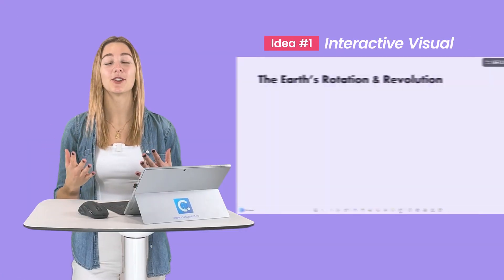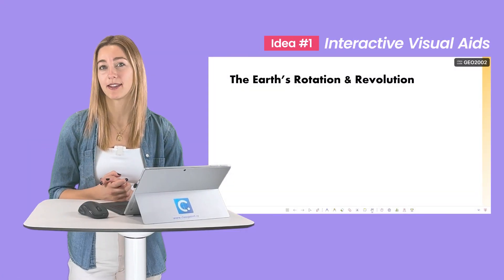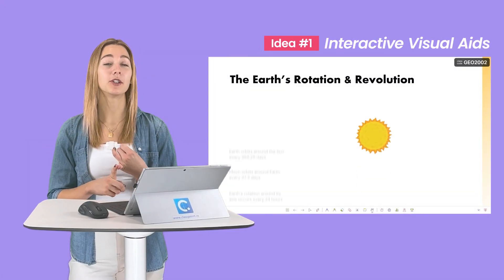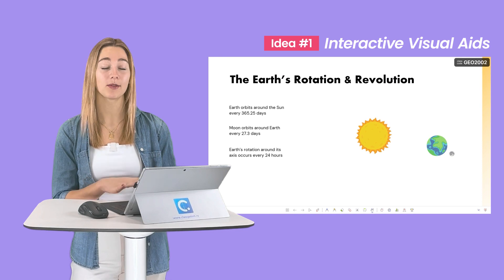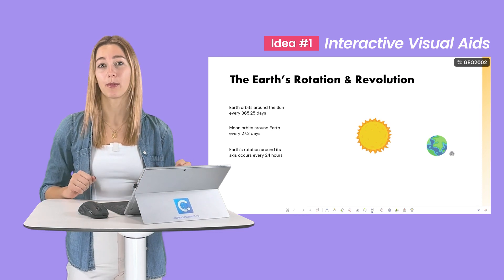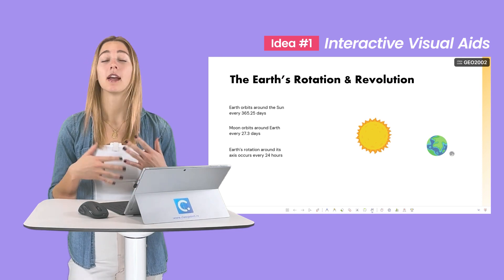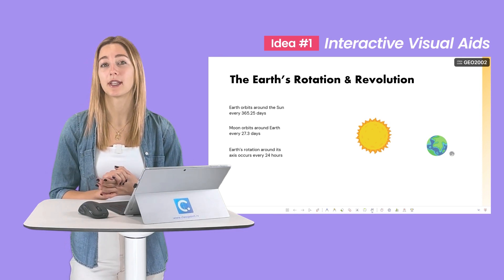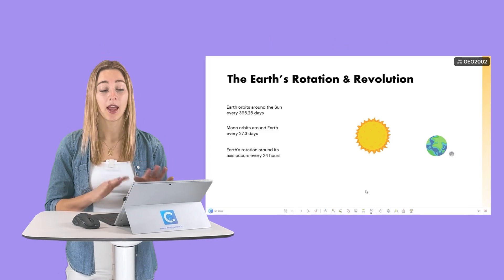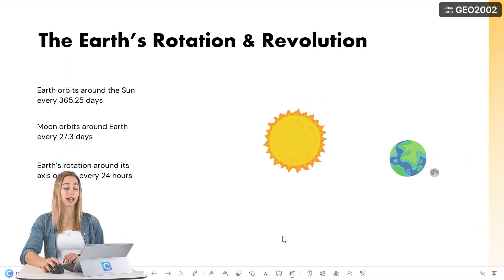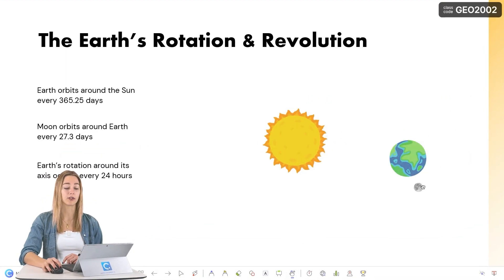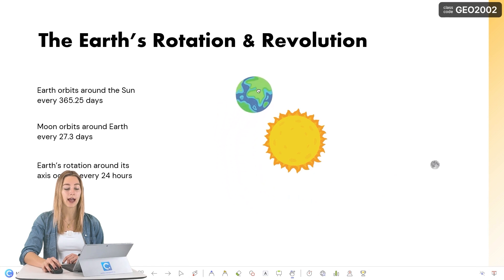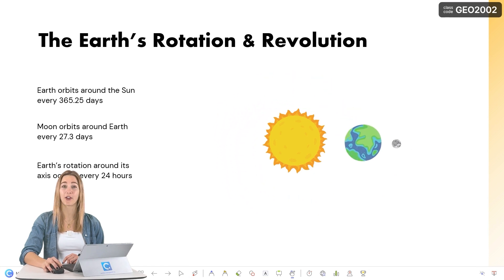Number one: interactive visual aids. Add any images, information, or other elements right into your PowerPoint presentation to help students understand complex visual concepts. Here for example, I can simulate the movements of objects in the solar system to show my students how all of their movements affect each other.